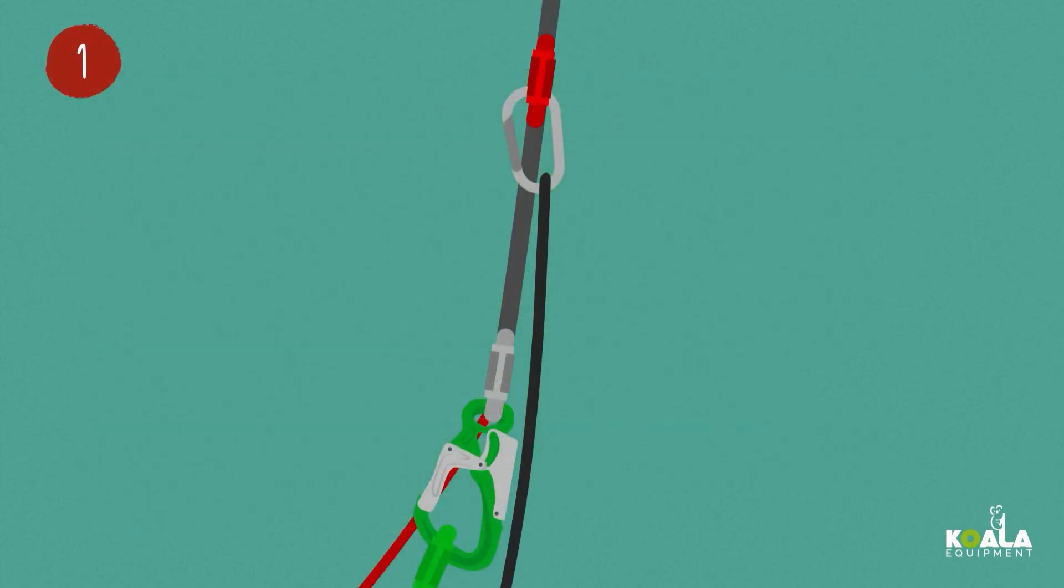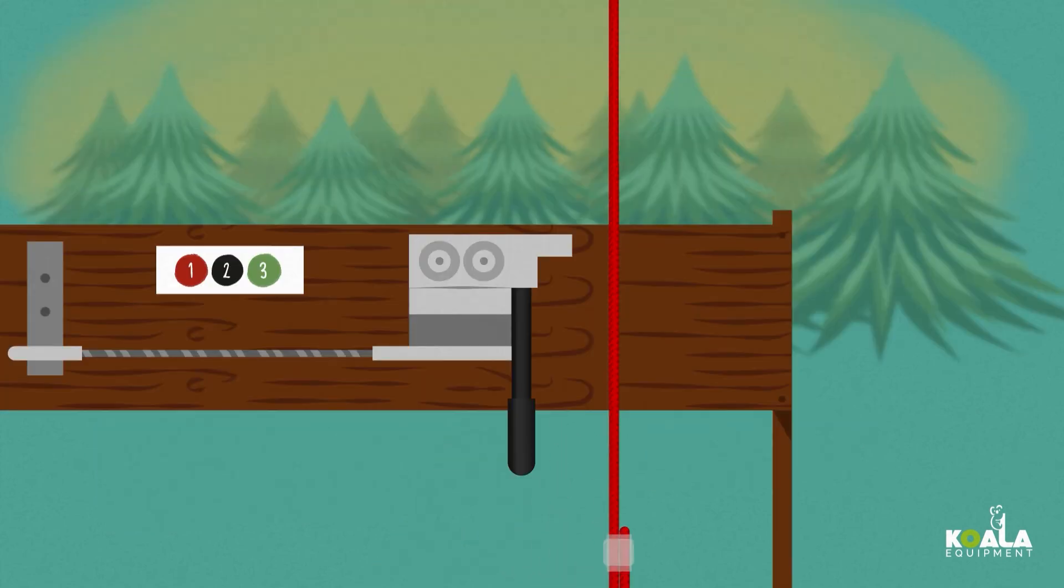Step 1. Red. Disconnect your carabiner from the red link and connect it onto the Lifeline wire rope.